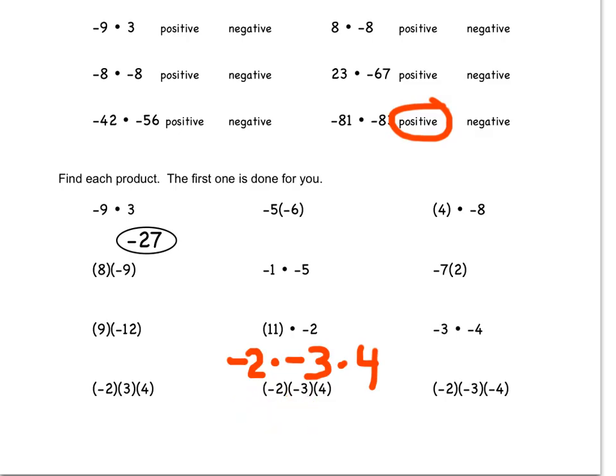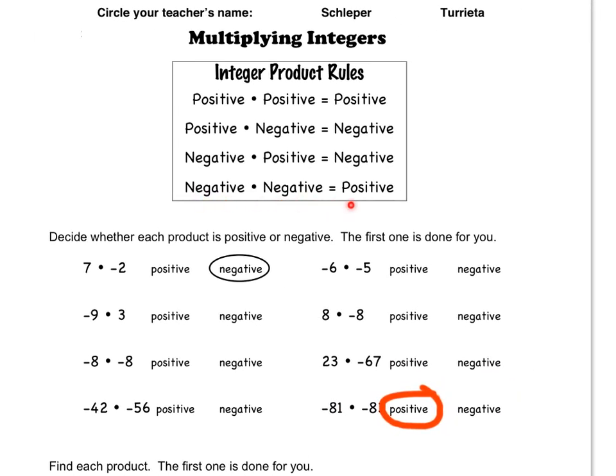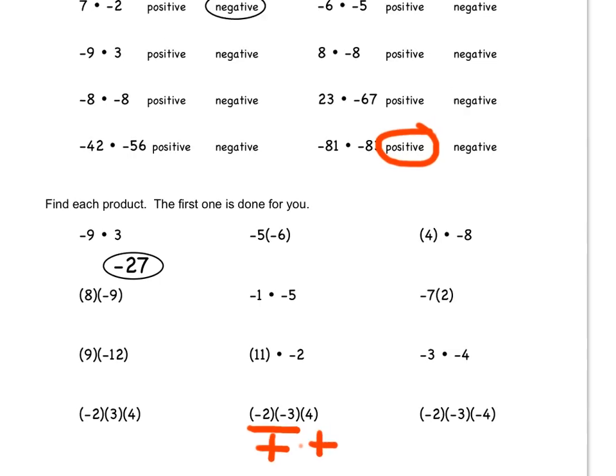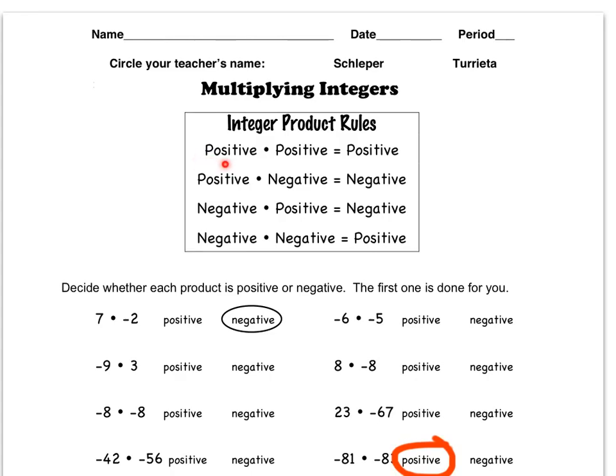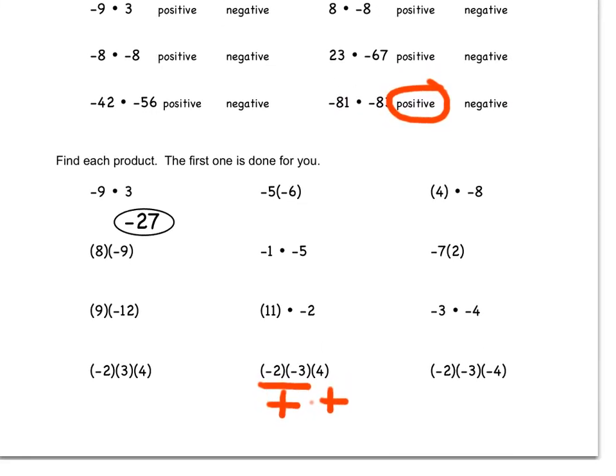So to figure this problem out, I don't necessarily have to rewrite it like that. I just know that I have a negative times a negative is going to give me a positive, and then I have, so I know that the product of these two is positive, and then I have to multiply it by 4, which is also a positive. So if I go back up here, I can see that a positive times a positive will give me a positive. So in the end, our answer should be positive.